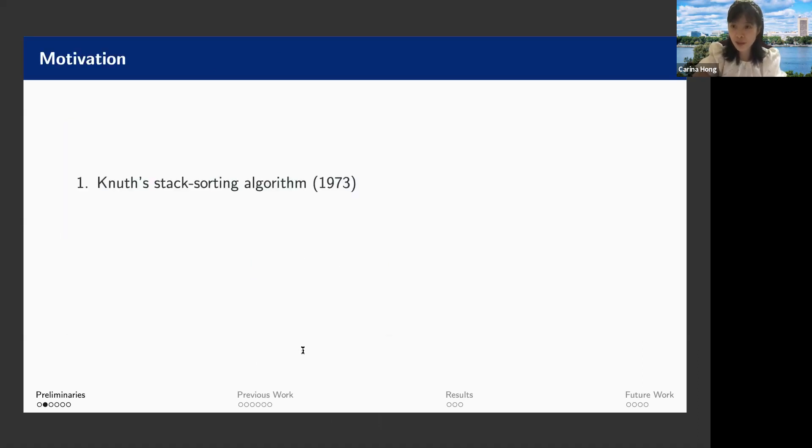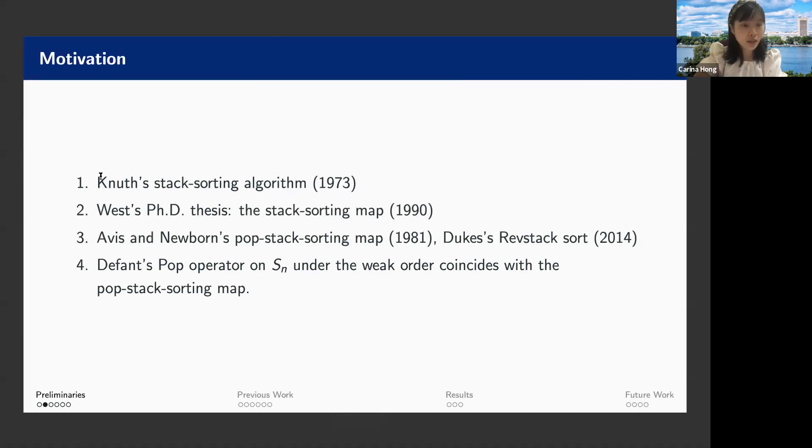And then so why do we study this operator? We define this operator motivated by a series of previous study. So Knuth had this stack sorting algorithm in 1973 and West in his 1990 PhD thesis groundbreaking work defined a deterministic variant of the stack sorting algorithm that is the stack sorting map. And the POP operator, when we apply this to the lattice of S_n under the weak order, also known as Bruhat order of a Coxeter group, this effect will coincide with the effect of the POP stack sorting map.